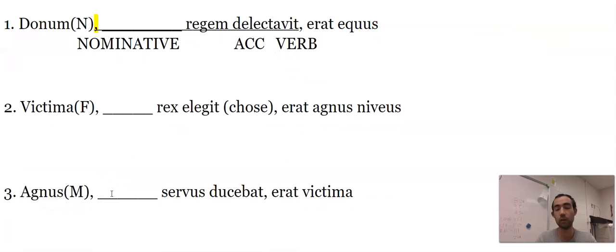Now, victima is the word for victim or sacrifice. And I have to put victim in the blank here. Rex elegit. Elegit is the word for choose. And I gave you that one. Or this is our verb. And Rex is nominative. It's not regem. It's not regis or anything.